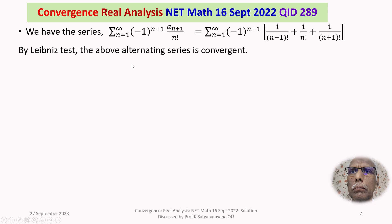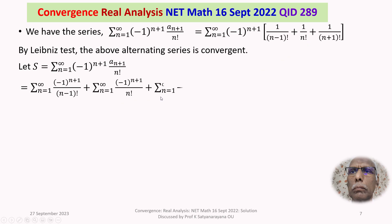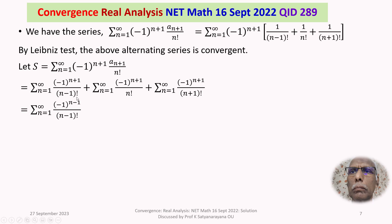Let S be the sum of the series. We separate it into three sigma sums: sigma n=1 to infinity of (-1)^(n+1) / (n-1)!, plus sigma n=1 to infinity of (-1)^(n+1) / n!, plus sigma n=1 to infinity of (-1)^(n+1) / (n+1)!. In the first term, (-1)^(n+1) = (-1)^(n-1) · (-1)² = (-1)^(n-1), giving sigma n=1 to infinity of (-1)^(n-1) / (n-1)!.